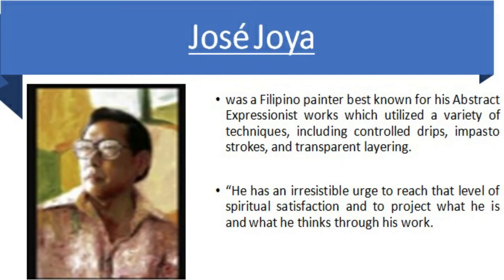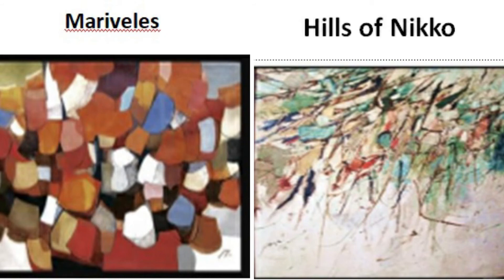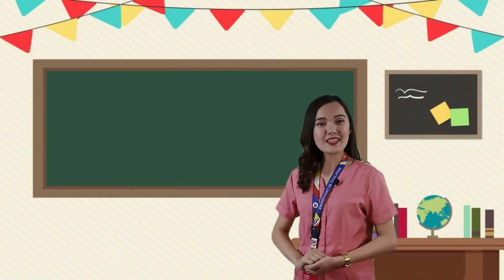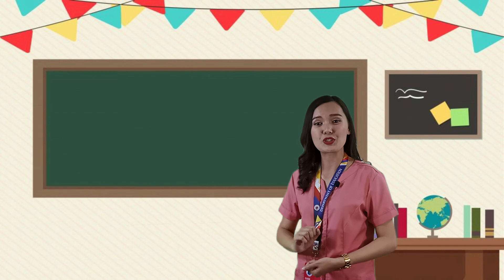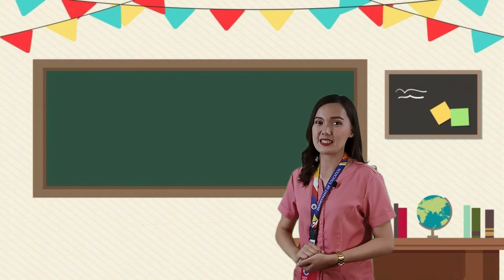Next, we have José Joya. He was a Filipino painter best known for his abstract expressionist works, which utilized a variety of techniques including controlled drips, impasto strokes, and transparent layering. In creating an artwork, the artist is concretizing his need for communication. He has an irresistible urge to reach a level of spiritual satisfaction and to project what he is and what he thinks through his art. His artworks include Space Transfiguration and the Hills of Miko — the artist's interpretation of the hills of Miko, Japan, where the hills' imperfections are thoroughly covered by snow during winter, an analogy to human imperfections.